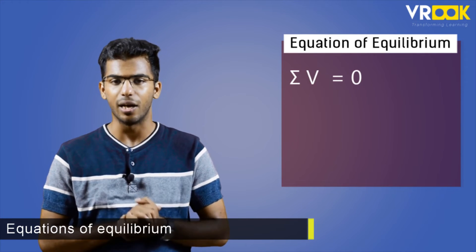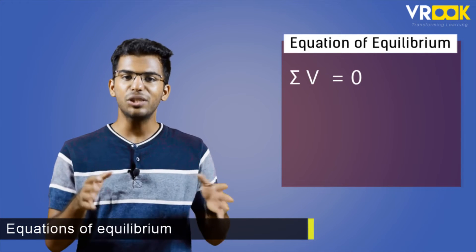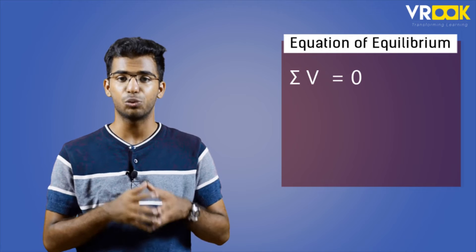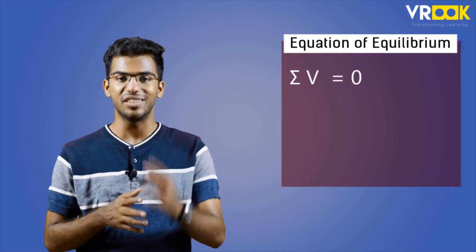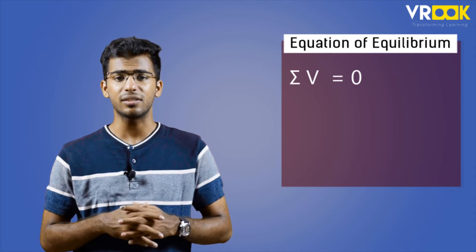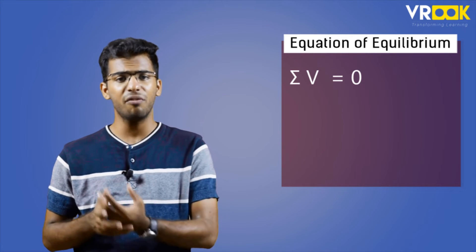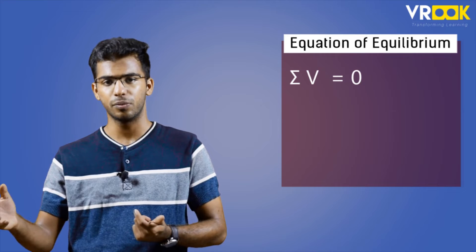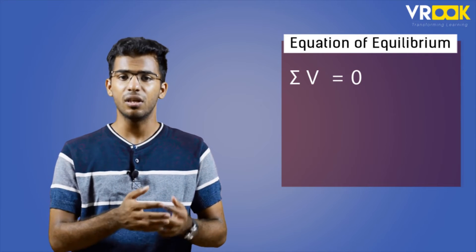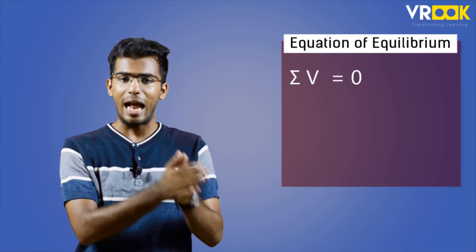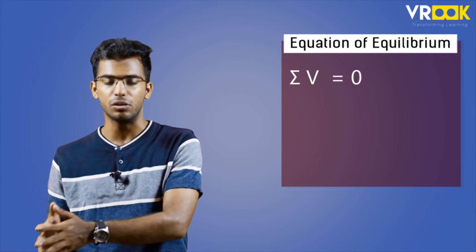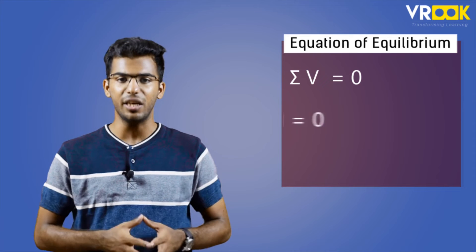The first equation states that the summation of vertical forces in the system should be zero — that is, sigma V equals 0 — which means the forces acting upwards and downwards should be equal.